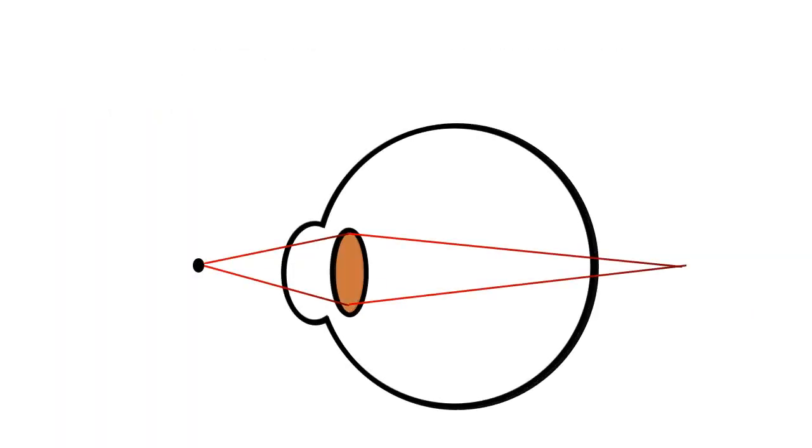Now with time, when this patient will develop cataract, one of the changes that will occur in the lens will be nuclear sclerosis. Nuclear sclerosis refers to progressive hardening of the lens. As the lens hardens, its refractive index increases. And as the refractive index increases, the converging power of the lens also increases.